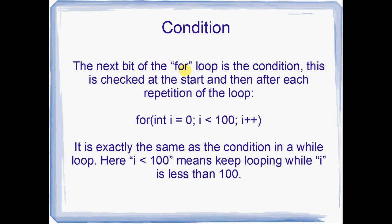The next bit of the for loop is the condition, and this is in the middle here. This is exactly the same as a while loop's condition. In fact, I read that as for int i equals zero, while i is less than 100, i++. So this middle bit is the condition, it's the same as a while loop.